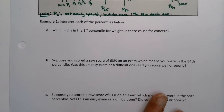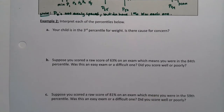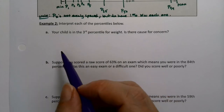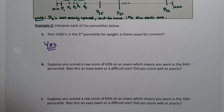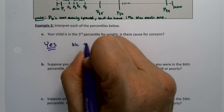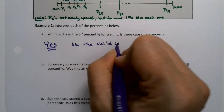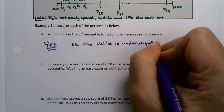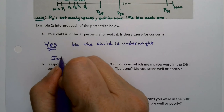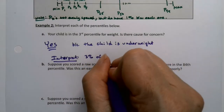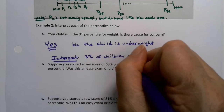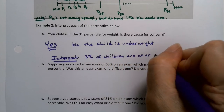Let's do some interpretation. Suppose your child is in the third percentile for weight — is there cause for concern? The answer is yes, that is a concern. This is one of the ways you see percentiles: in the pediatrician's office. There is cause for concern because the child is underweight. We would say 3% of children are at or below this child's weight.